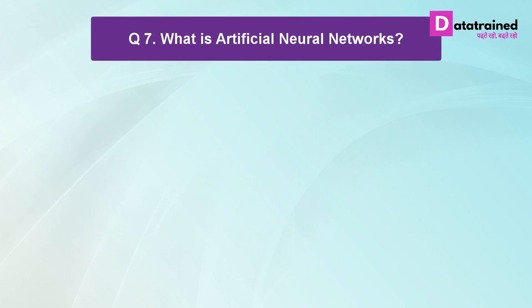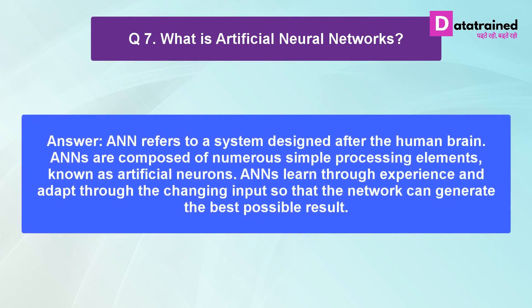What is artificial neural network? ANN refers to a system designed after the human brain. ANNs are composed of numerous simple processing elements known as artificial neurons. ANNs learn through experience and adapt through the changing input so that the network can generate the best possible result.